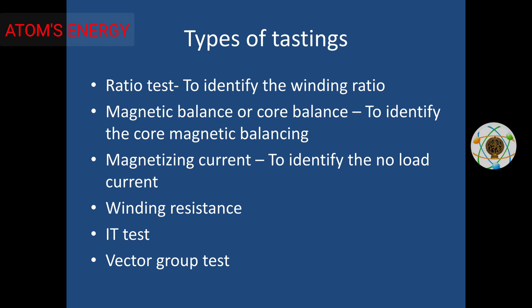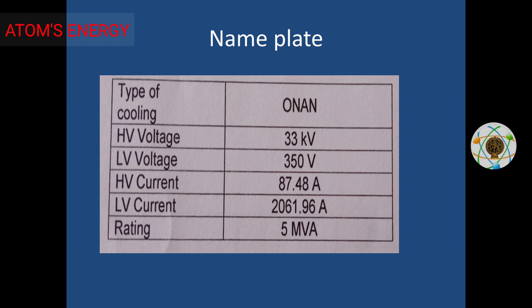The IR checks insulation. We can check the vector group and find the vector group in detail. I will show you the link in the description for all transformer-related videos. Let's see the nameplate of the transformer — this shows the vector group, type of cooling. This transformer is ONAN — oil natural and air natural. HV side is 33kV, LV side is 350V, and this is a 5MVA rating.